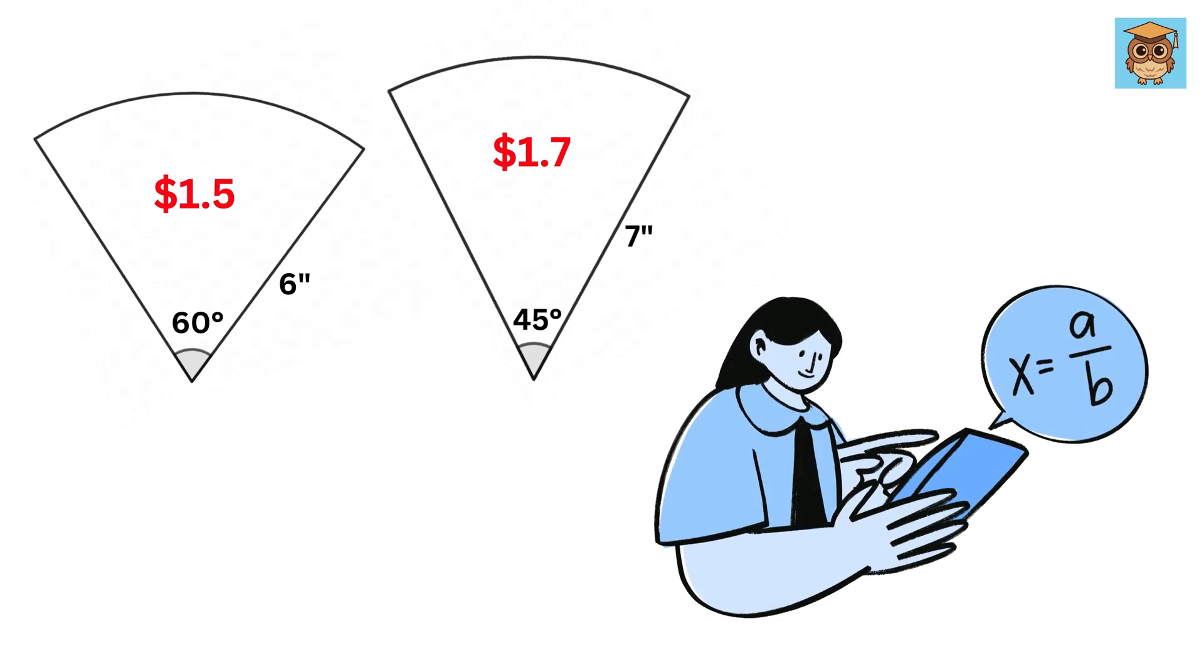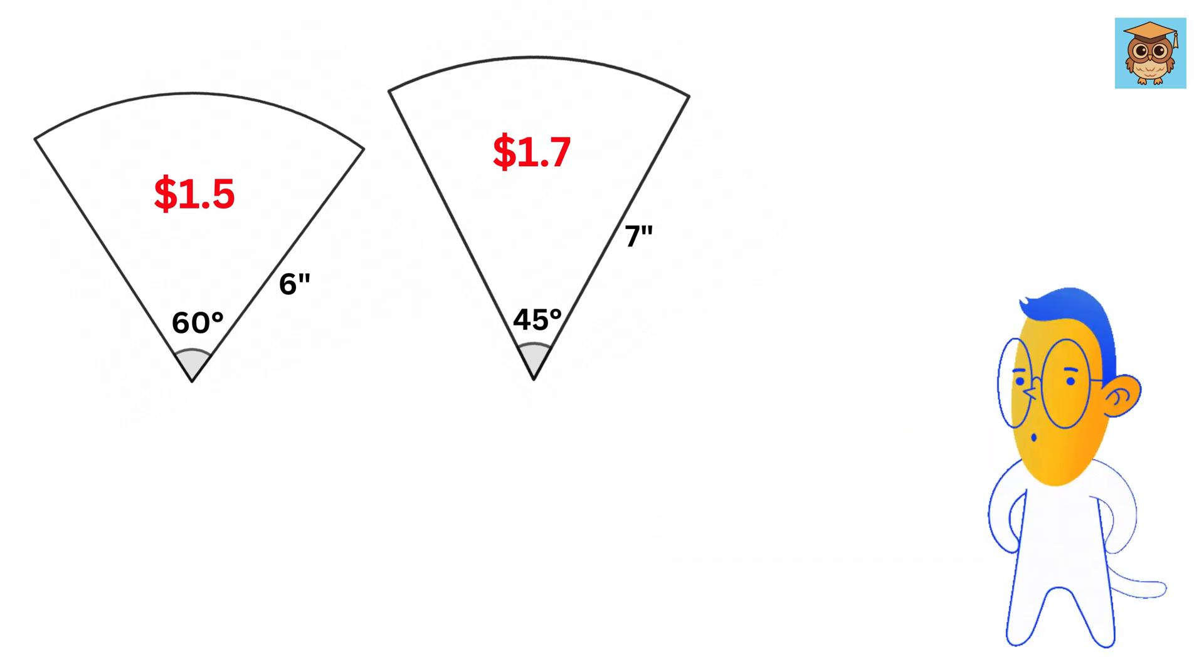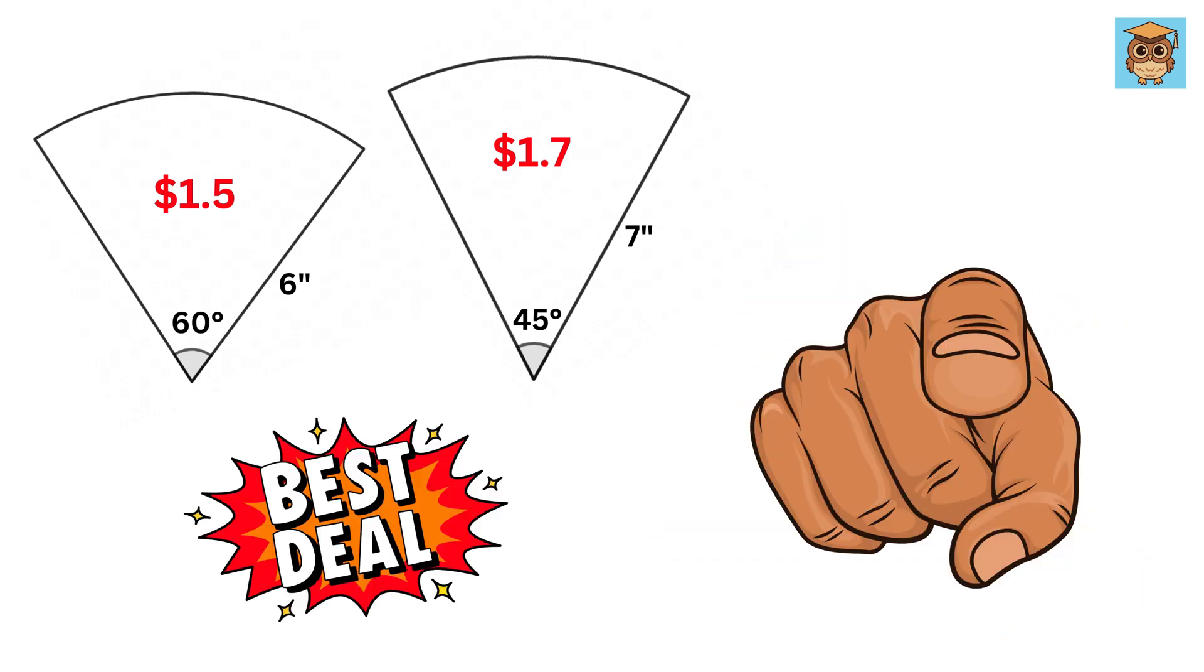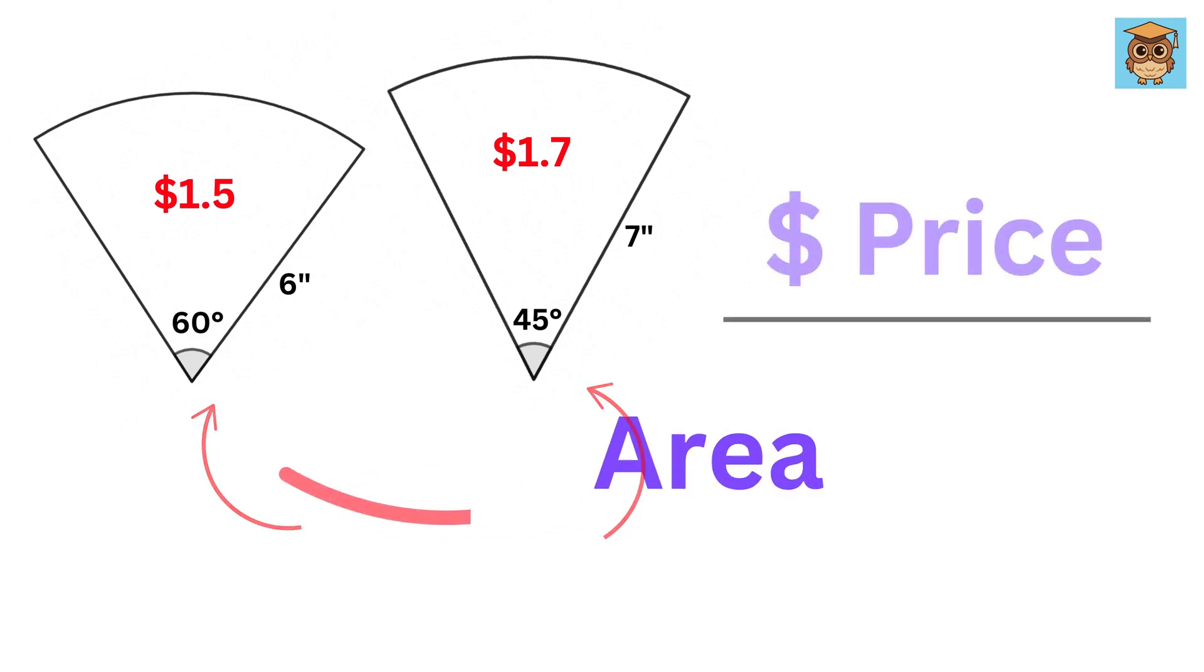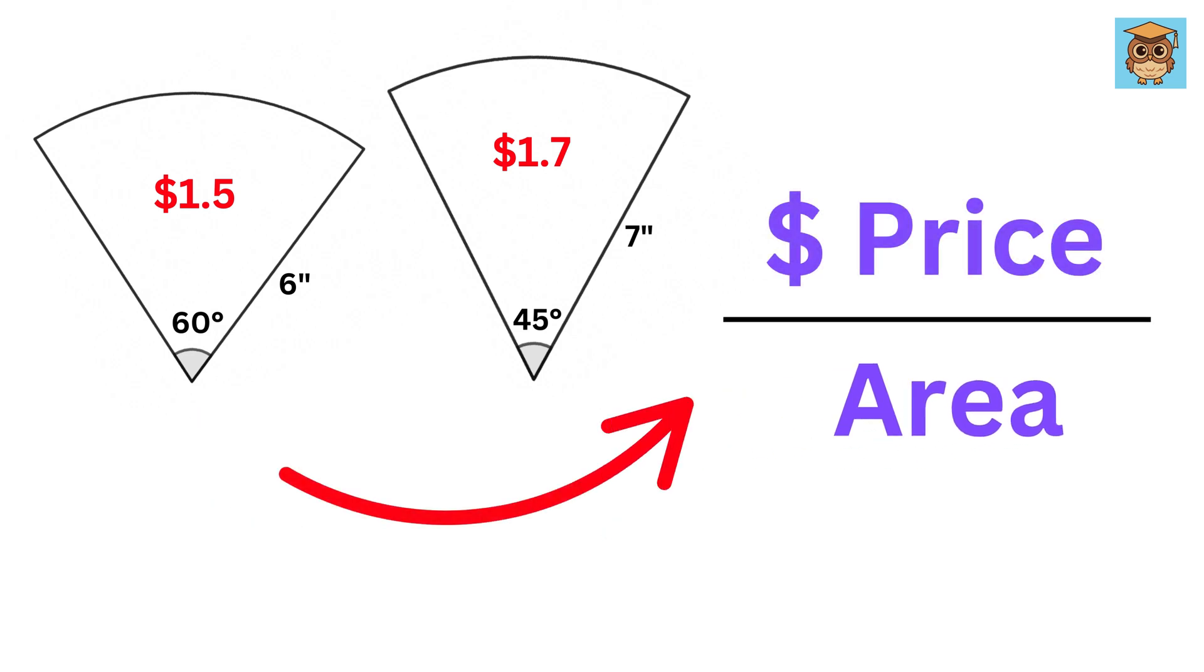Our job is to find out which slice of pizza is a better deal. So, can you help us find it out? In order to find a better deal, we need to find the area of the slice of the given pizzas, and then we will divide it with their respective prices to find the unit price of the pizza, which means if I have a unit square area of this pizza, then how much will it cost?